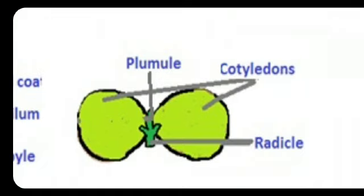Look carefully — at the bottom you can see the radicle portion. This radicle portion is called the embryonic root, which means it will form the root system. Then the plumule, which you can see easily, is called the embryonic shoot, which develops and forms the shoot system — the aerial part of the plant.